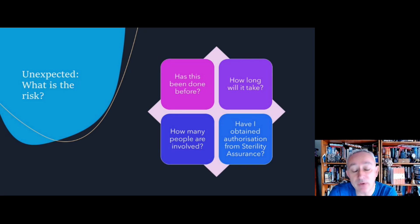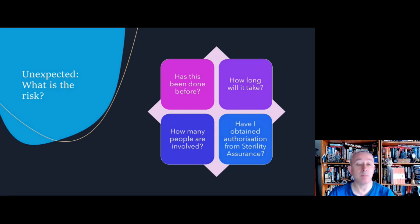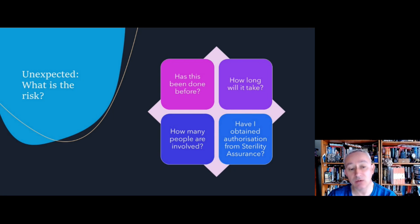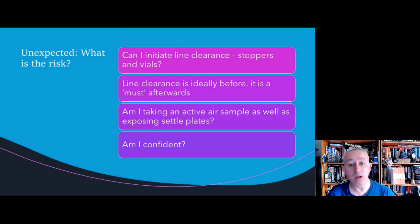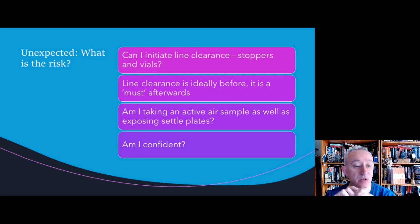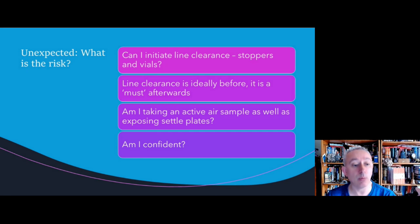When considering whether to carry out an intervention, we need to understand that in reality there may be situations not fully covered by procedures, and unexpected events may require an immediate response. Key decisions include: has it been done before, how long will it take, and how many people are involved. If it's not routine and hasn't been done before, have we obtained authorization in advance from sterility assurance or from microbiology 24/7 if sterility assurance is not available? We also need to consider whether we can initiate line clearance — not just vials but stoppers as well. Ideally, line clearance should be done before the intervention, but if not, it must be done after. If line clearance is not possible, the intervention probably constitutes greater risk.